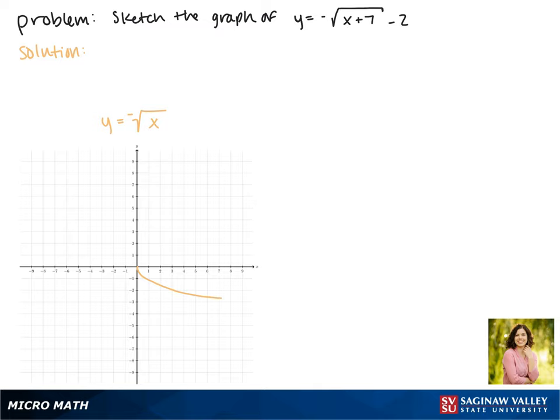Now onto translations. Because we're adding 7 to x, that moves our function to the left seven spaces.